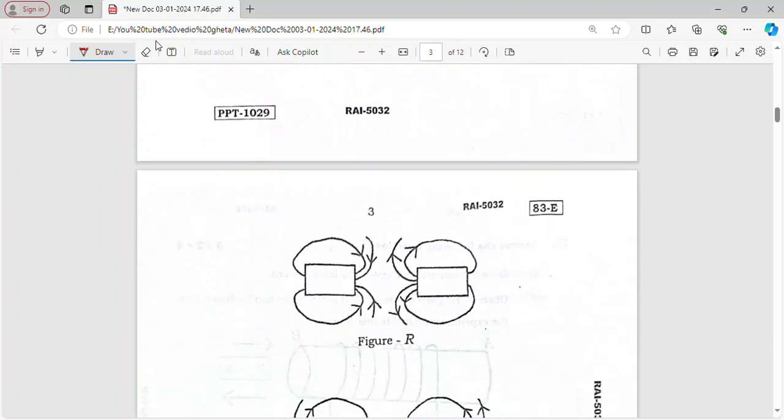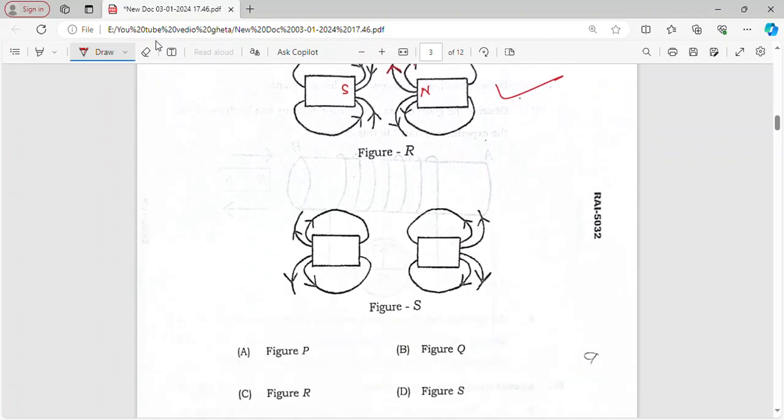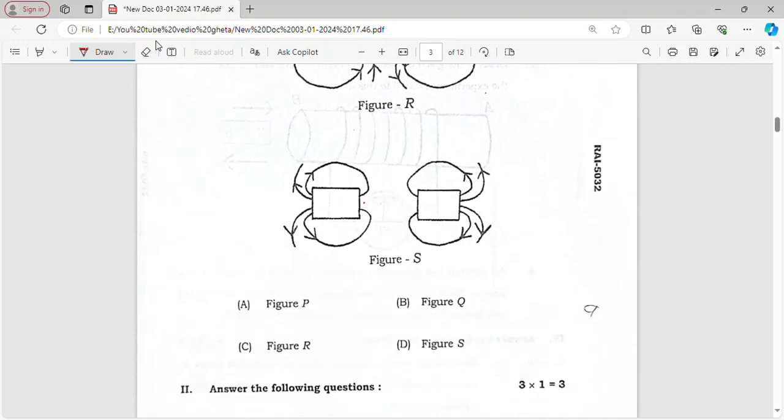Here you can see the magnetic field lines are coming in and here the magnetic field lines are going out. So figure R is the correct answer. If it is coming out then it is North Pole, so this must be a South Pole and there's no chance of attraction. Figure R is correct.